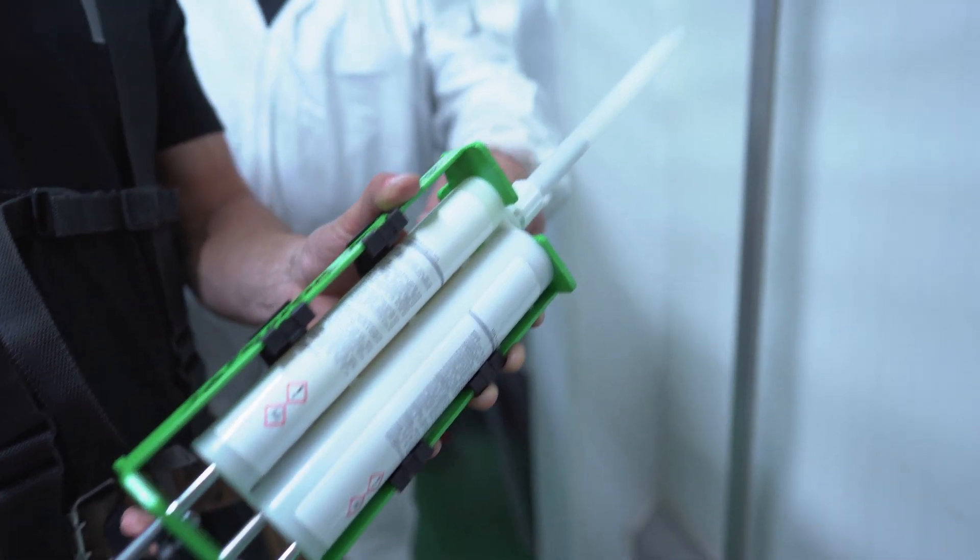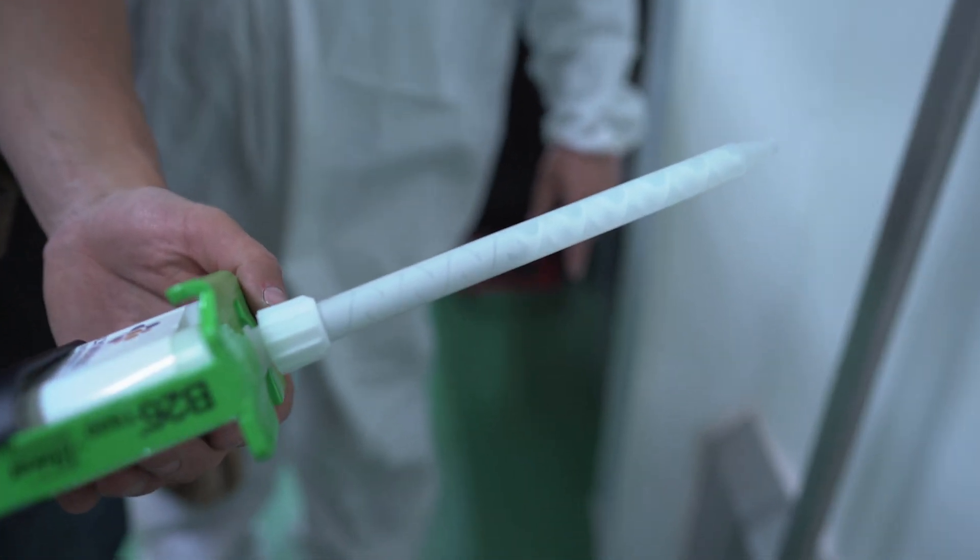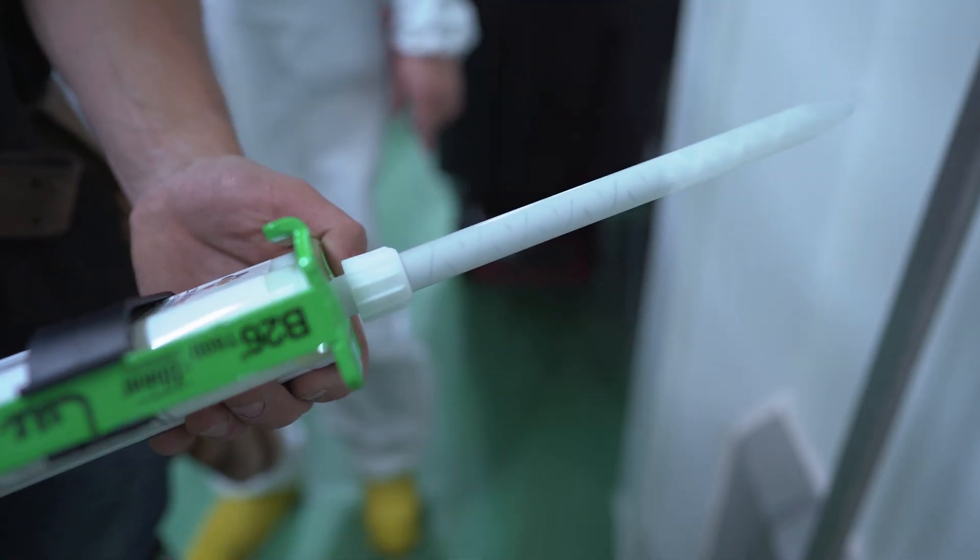Press out an inch of product from the cartridge static mixer to make sure parts A and B are coming out equally.